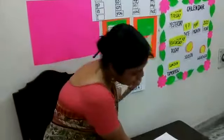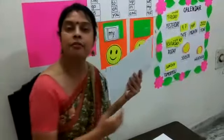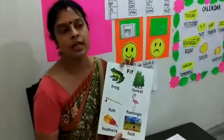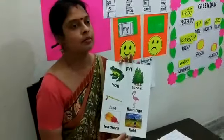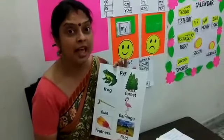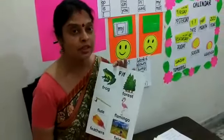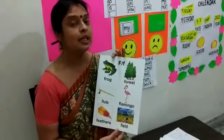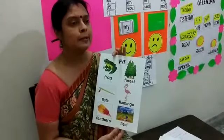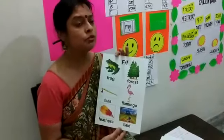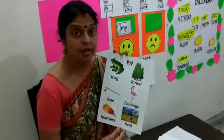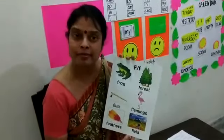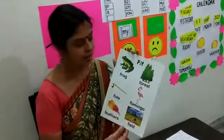Now the F story — Fifi. Fifi's father gave him a flute, and he loved the flute so much on his birthday. But the flute fell into the river, and his friends helped him get the flute back.